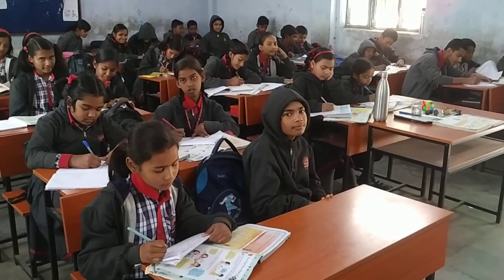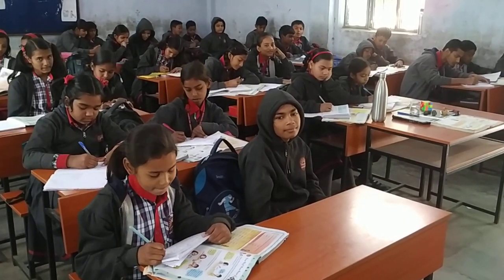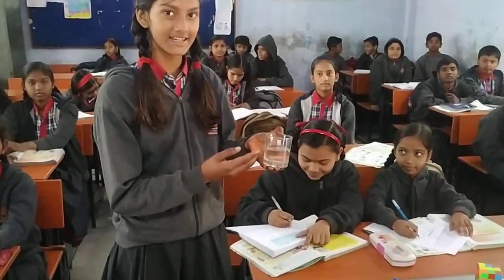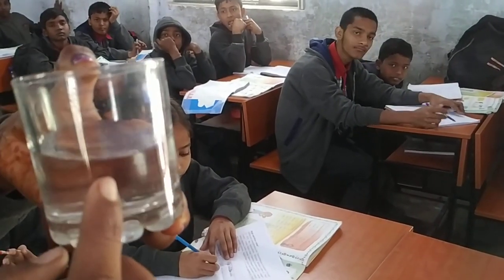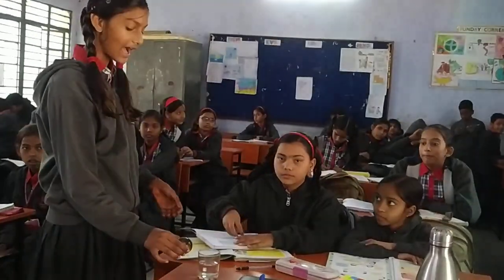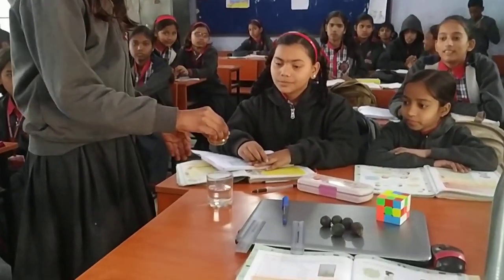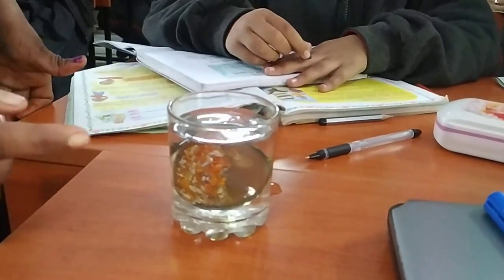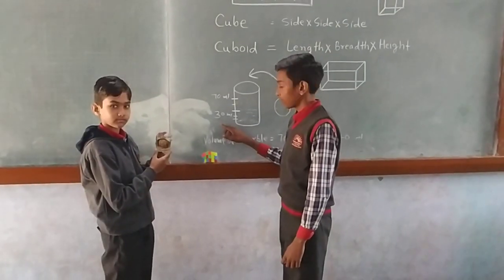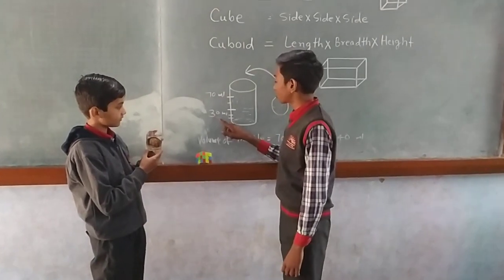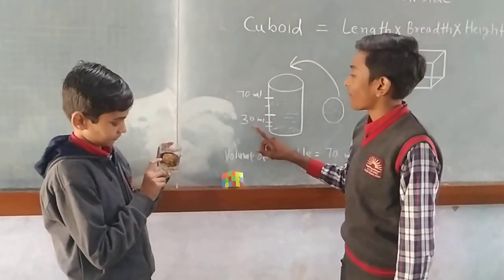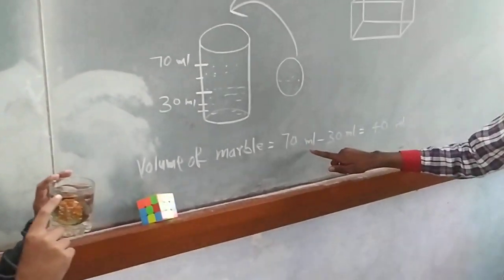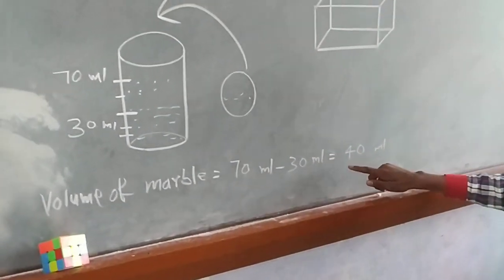How to find out the volume of marbles? The volume of marbles is 70 ml minus 30 ml equal to 40 ml.